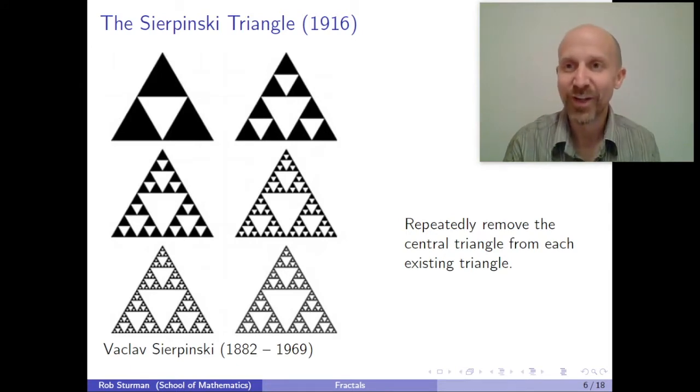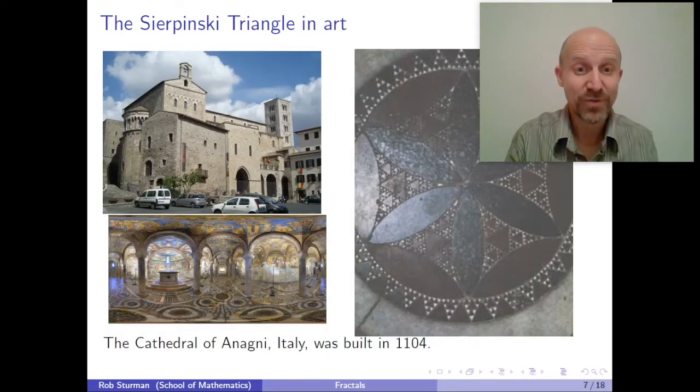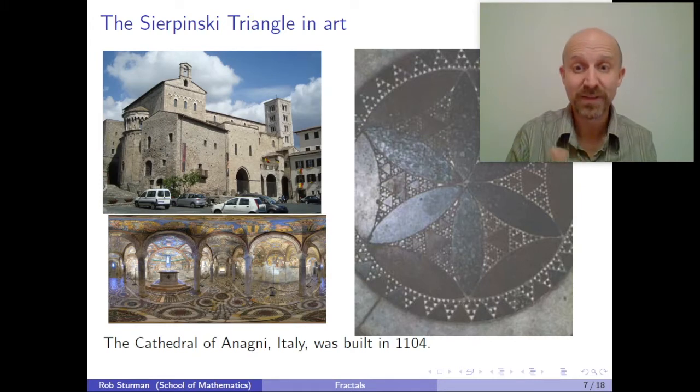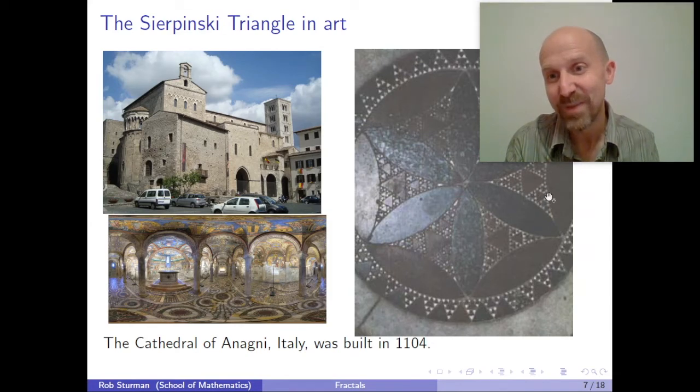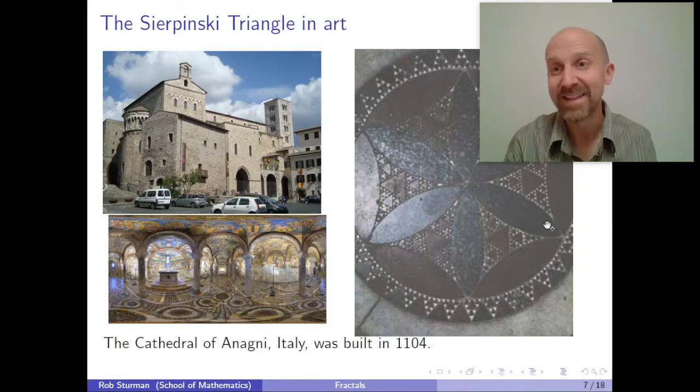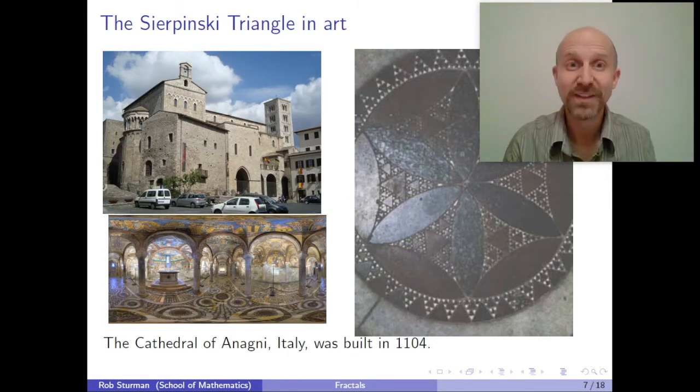Now, I said that mathematicians had got there first before Mandelbrot and the other people interested in fractals. Inevitably, artists have got there before mathematicians. This is a picture of the Cathedral of Agnagni in Italy, built in 1104. The floor of this cathedral is not quite as old. It's only about 100 years later, though. It was built around 1200, this floor in the crypt. And you can see, if you look carefully, exactly this design of the Sierpinski triangle inlaid in mosaic in the floor of this cathedral. So people, humans had already for nearly 1000 years understood the aesthetic beauty of these sorts of objects.